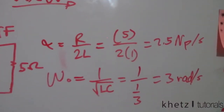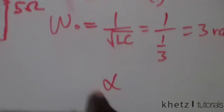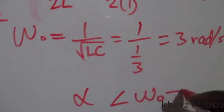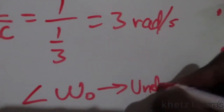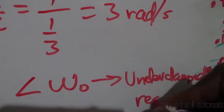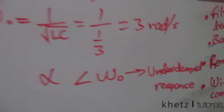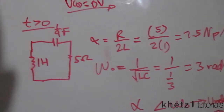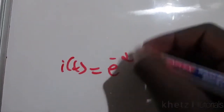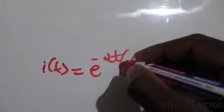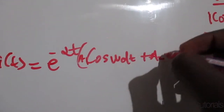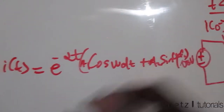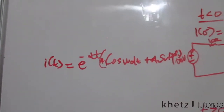Since α = 2.5 is less than ω₀ = 3, we have an underdamped response. An underdamped response has a general form associated with complex numbers involving e^(−αt) multiplied by cosine and sine terms with ω_d.